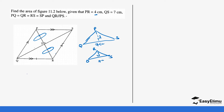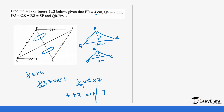We calculate the area of each triangle using one-half times base times height. The upper triangle: ½ × 7 × 2 = 7. The lower triangle is the same: ½ × 7 × 2 = 7. Adding them gives 7 + 7 = 14 centimeters squared.